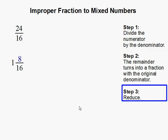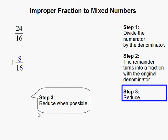Step 3. Reduce. A final step is to reduce whenever possible. 8 over 16 can be reduced. They can be divided by 8, which becomes 1 and 1 half, and 1 and 1 half is our answer. This completes our problem.